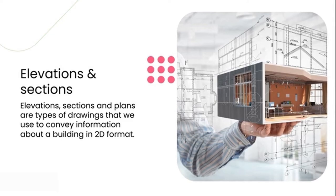Elevations, sections, and plans are types of drawings that we use to convey information about a building in a 2D format — and sometimes 3D, but we'll touch on that as we get along this lesson. We use a combination of these three drawings during the schematic phase. As you know, the schematic phase is part of our design process that we learned in lesson 1.